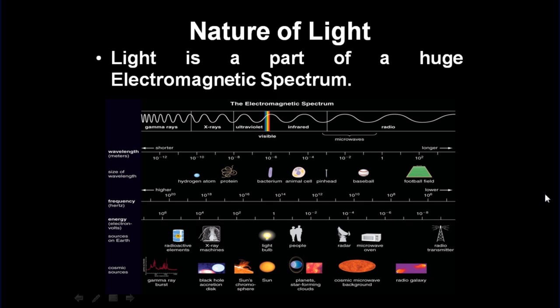High energy is associated with high frequency waves. Hence, the frequency of gamma rays being very high, energy associated with them is extremely high. The frequency of radio waves being low, the energy associated with them is very low.